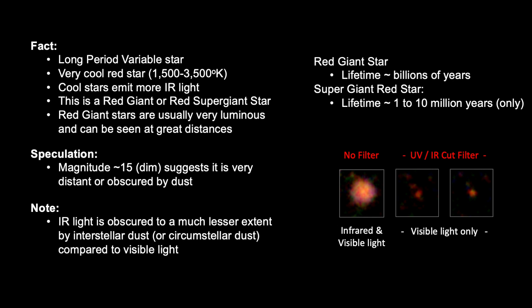Okay, let's summarize. Fact. This is a long period variable star. Fact. It is a very cool red star, probably between 1500 and 3500 degrees Kelvin. Fact. Cool stars emit much more infrared light. Fact. This is a red giant or a red supergiant star. Fact. Red giant stars are usually very luminous and can be seen at great distances. Speculation. Magnitude 15 is very dim and suggests it's either very distant or somewhat obscured by interstellar dust or both. And remember, infrared light is less affected by interstellar dust, which somehow factors into this ratio of visible versus infrared light being detected by my telescope.